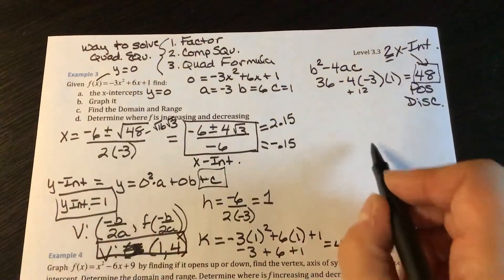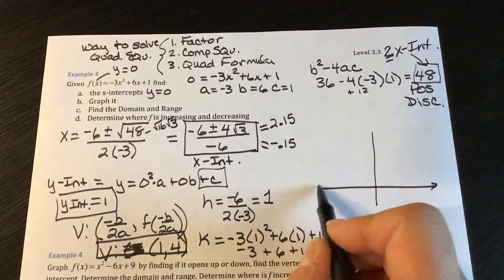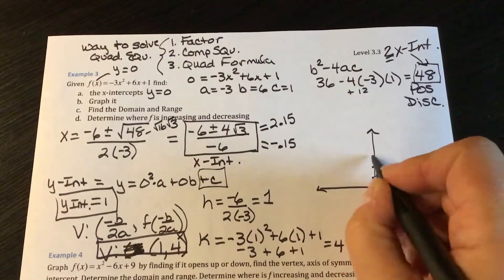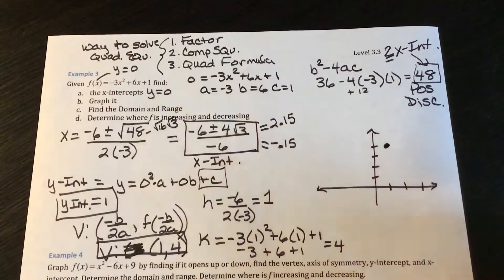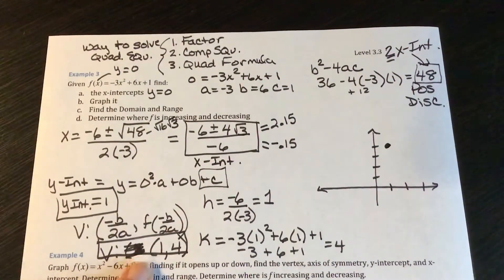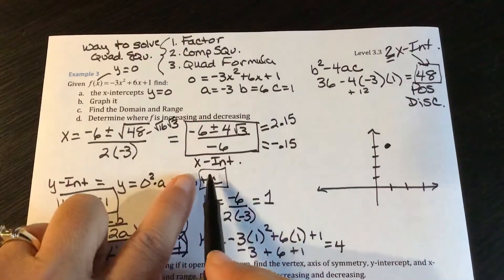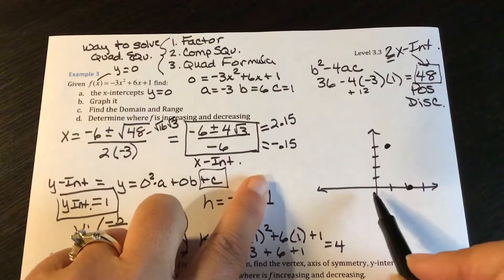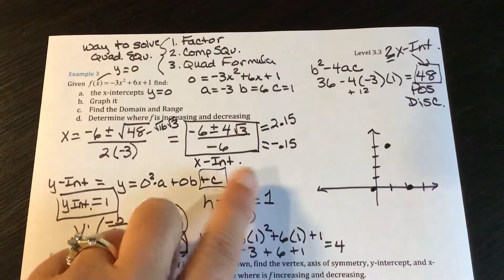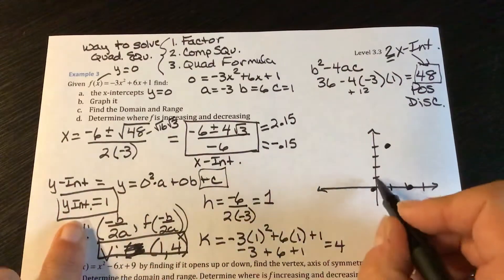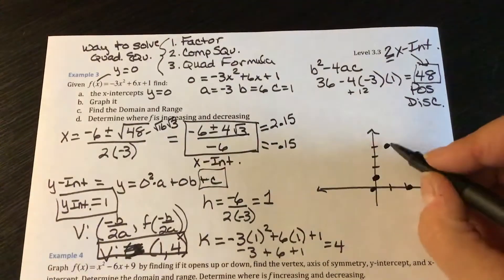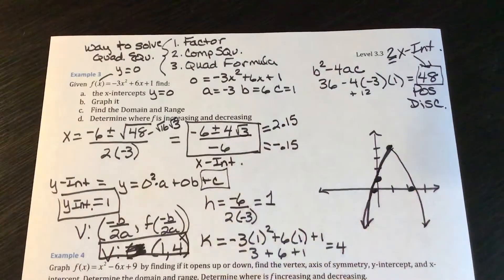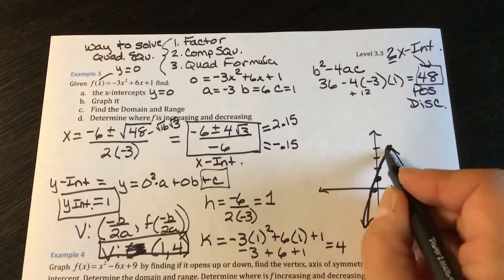Graphing this: my vertex is at (1, 4), so over 1 and up 4. I also have my x-intercepts at approximately 2.15 and negative 0.15, and a y-intercept of 1. I can draw through these points to get a parabola, a little more curved at the top.